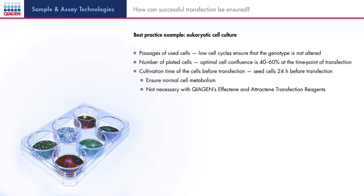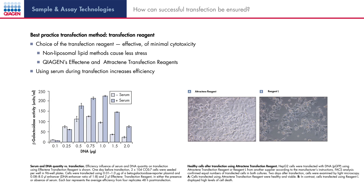We'll now discuss the effect of additional factors such as cell culture and transfection method. With regards to cell culture, best practice is to use cells with a low number of cell cycles to ensure an unchanged genotype. The optimal cell confluence is around 40–60% at the time point of transfection. To obtain cells with normal cell metabolism, it is recommended to split them 24 hours before transfection. The transfection method must be evaluated to ensure minimal cytotoxicity. Non-liposomal lipid methods cause minimal stress to cells, resulting in higher survival rates, as shown in the figure on the upper right. Increased efficiency can also be reached if the transfection reagent allows the use of serum during transfection.